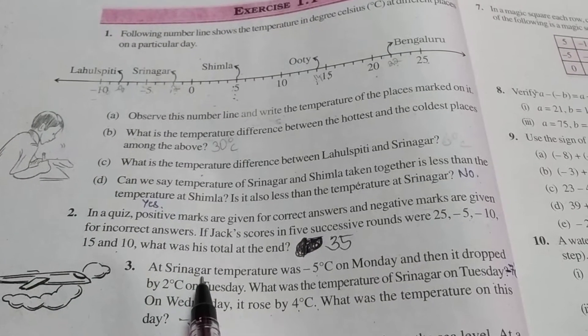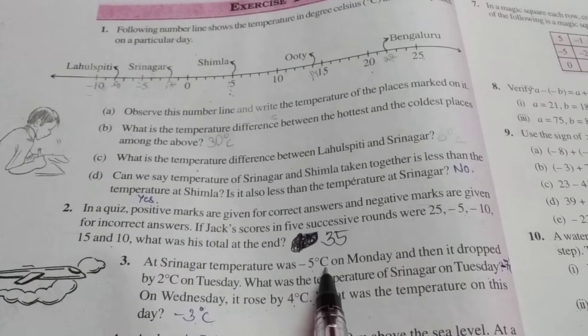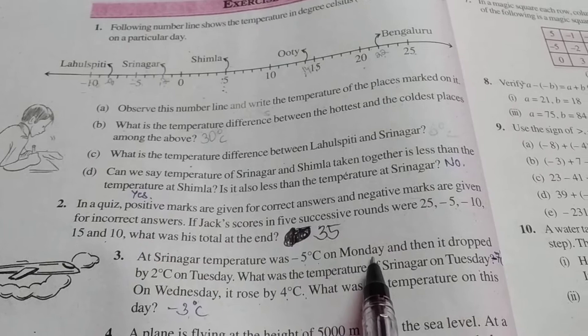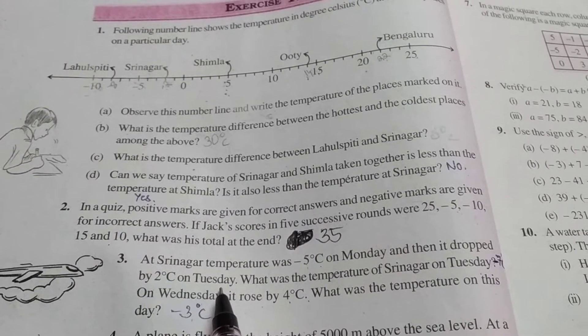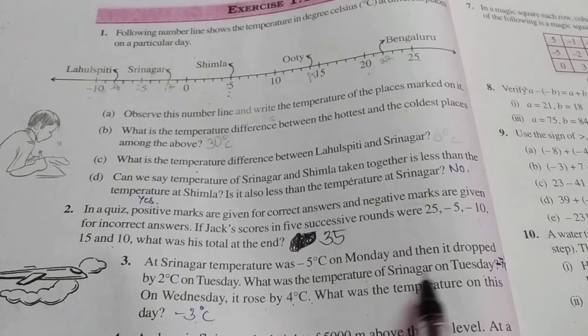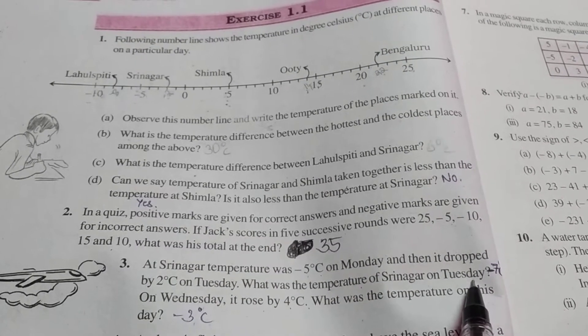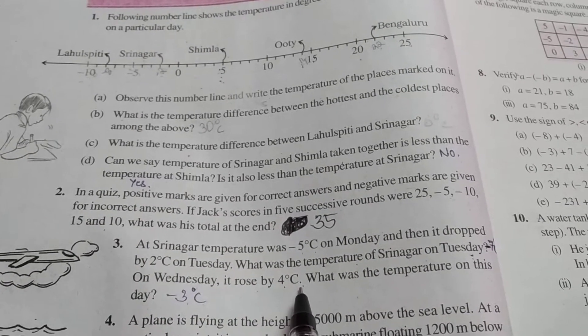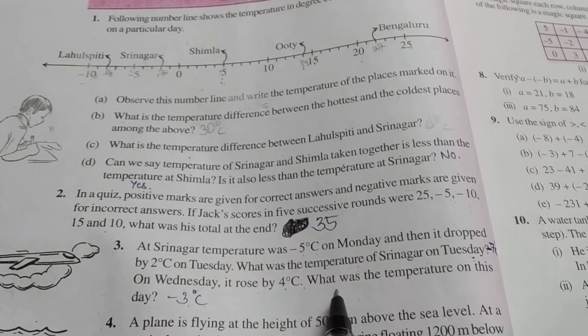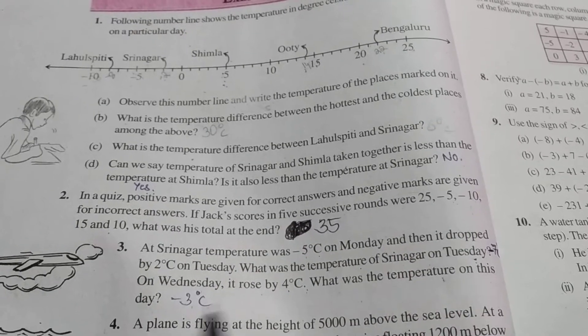At Srinagar temperature was minus 5 degrees Celsius on Monday and then it dropped by 2 degrees Celsius on Tuesday. What was the temperature of Srinagar on Tuesday? On Wednesday it rose by 4 degrees Celsius. What was the temperature on this day?